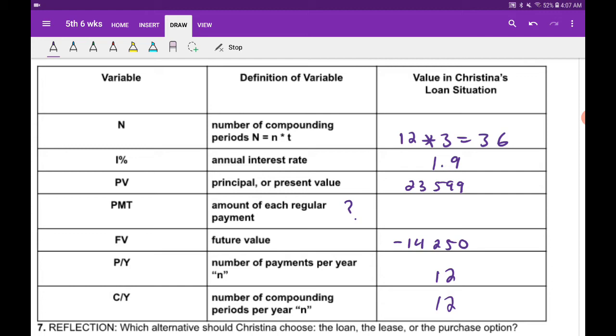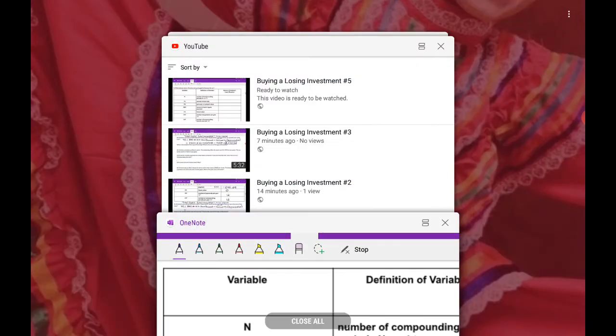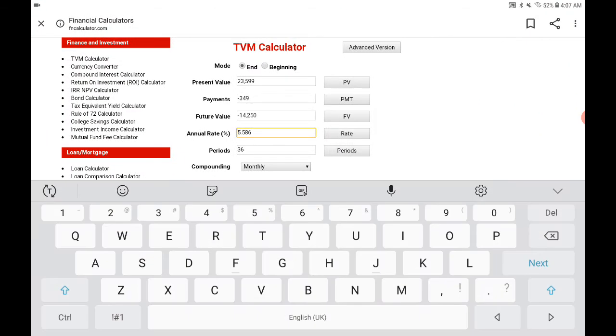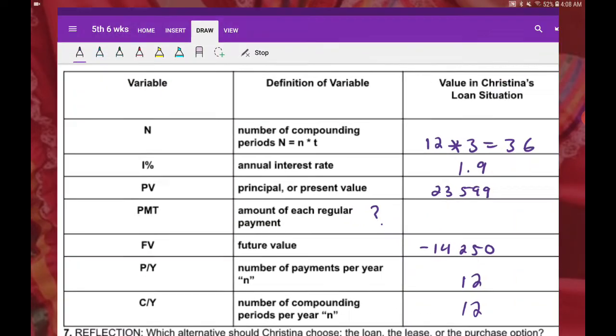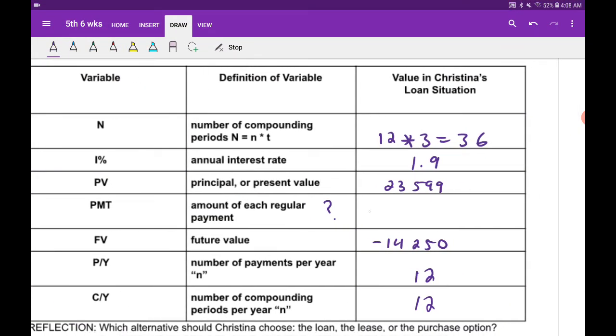So let's figure out this payment, going to our calculator here. All right, so we got 36 months already. We need to change our interest rate, that's going to be a 1.9. All right, their future value, that's right. The payments is what we want to figure out and the price of the car.